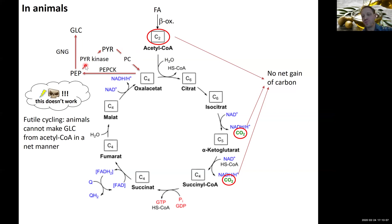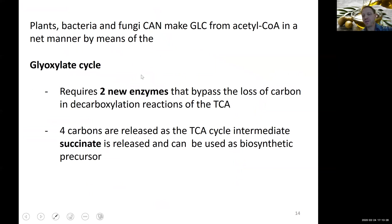Animals cannot do this because of futile cycling around refilling of the TCA cycle's OAA, if you were to take it out for gluconeogenesis and the production of glucose. Other organisms, however, have another cycle. Plants, bacteria, and fungi can actually make glucose from acetyl-CoA in a net manner, and they use a new cycle called the glyoxylate cycle. It is actually very similar to the TCA cycle — it requires only two new enzymes — and what these enzymes allow these organisms to do is bypass the decarboxylation reactions of the TCA, preventing the carbon loss from happening.